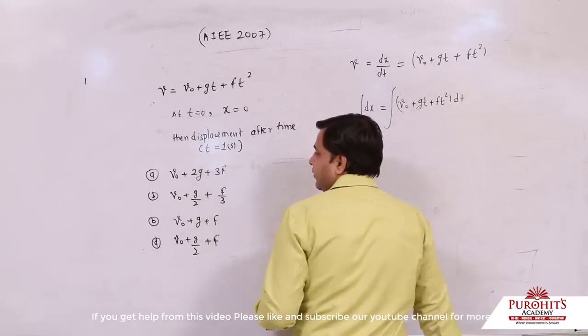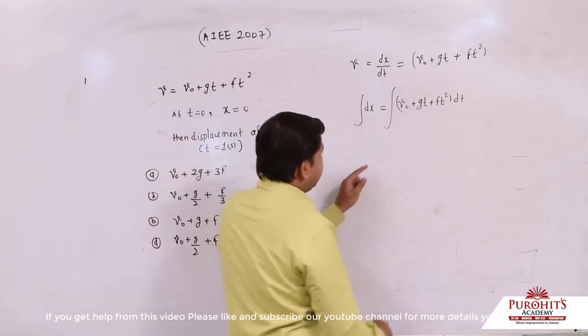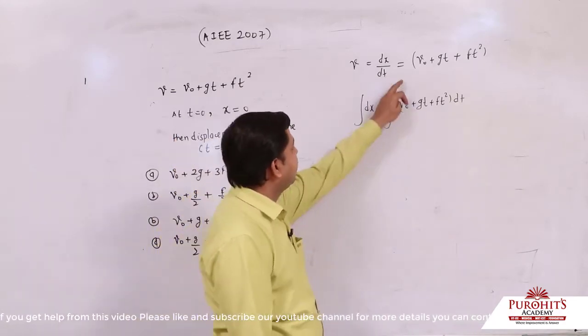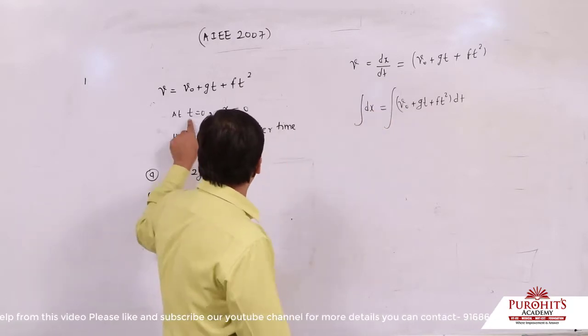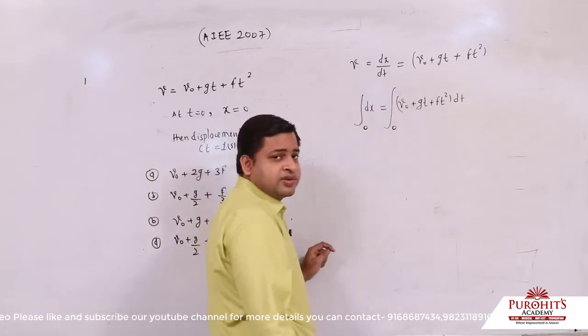Taking integration on both sides. Time - see, this limit is lower limit, this is upper limit. So time t equals 0, in the beginning the particle position is 0.